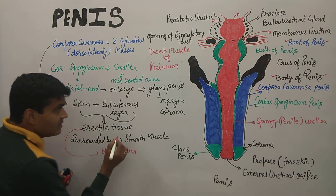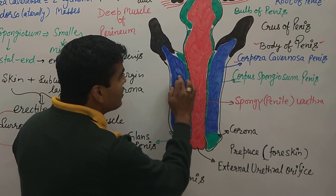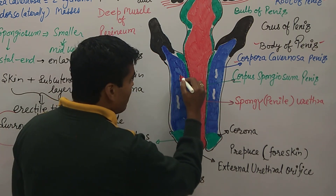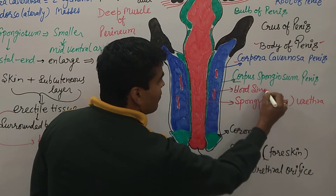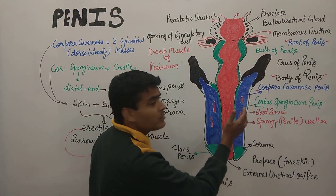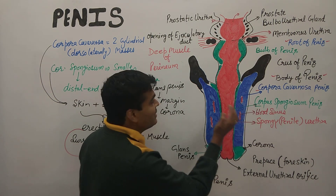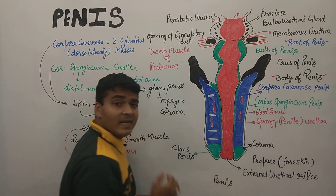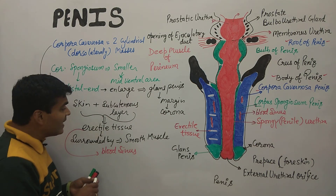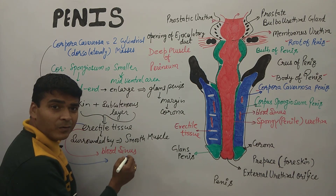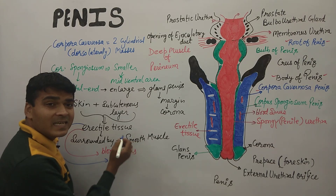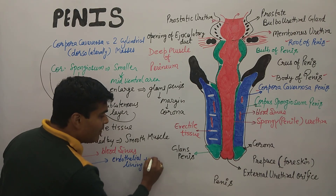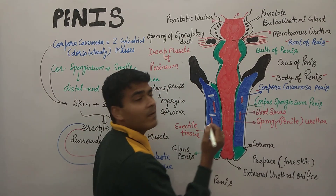Here you can see the blood sinuses within the erectile tissue of the corpora cavernosa. The erectile tissue is covered by an endothelial lining, and alongside that we also find smooth muscle and elastic tissue.